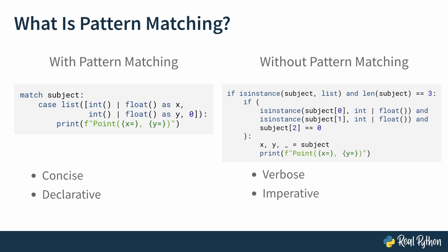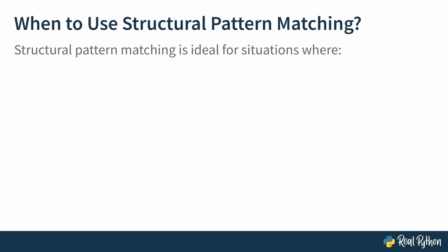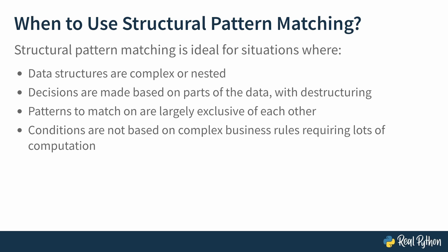So comparing these two different styles, you can see our pattern matching code is very concise and very declarative. You simply describe the kind of object you'd like to match as a pattern, and Python handles the rest. Without pattern matching, the code is verbose, to say the least. It's a little hard to read. And it's also imperative. You define exactly how to match subject through repeated if conditions. Now, imperative isn't always wrong, and declarative isn't always right. But I know in this case which style I would prefer to use. So generally, when should you use structural pattern matching? Structural pattern matching is ideal for situations where data structures are complex or nested. Decisions are made based on parts of the data using destructuring. Patterns to match are largely exclusive of each other. And conditions are not based on complex business rules requiring lots of computation or many calculations at runtime. Congratulations, you made it through the theory, and now it's time for the practice. In the next lesson, we'll introduce a few basic patterns and get started on a project to see them in action.